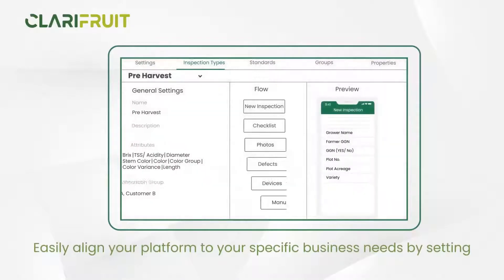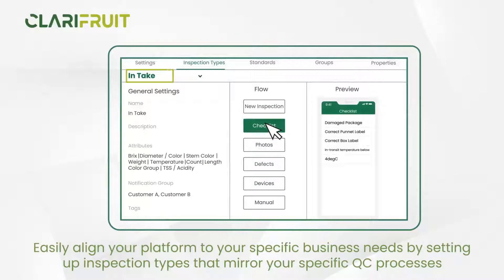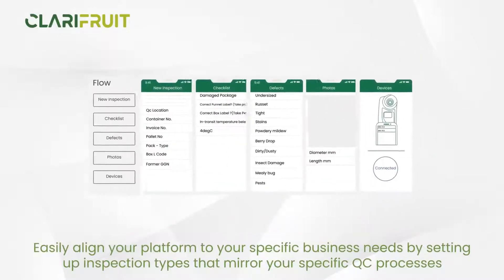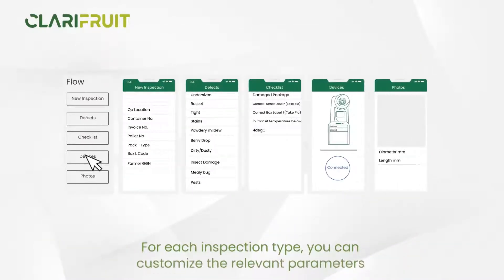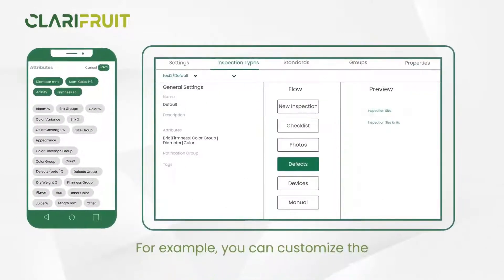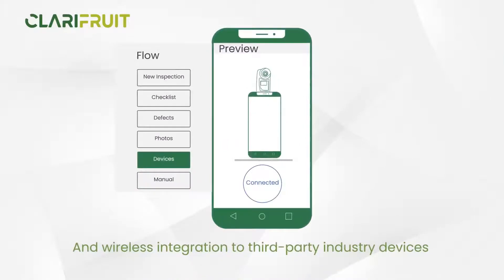Easily align your platform to your specific business needs by setting up inspection types that mirror your specific QC processes. For each inspection type, you can customize relevant parameters, including the list of attributes, defects, and wireless integration to third-party industry devices.